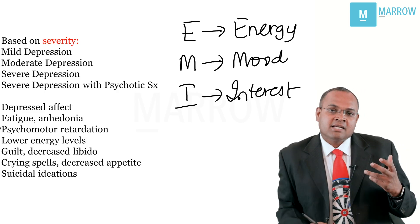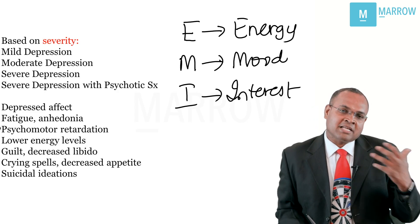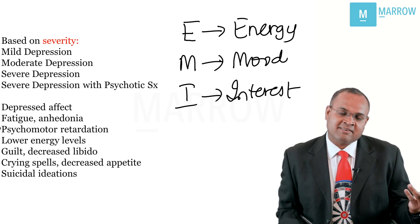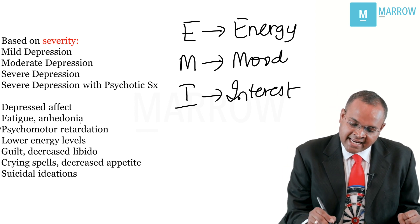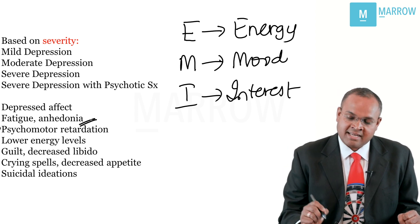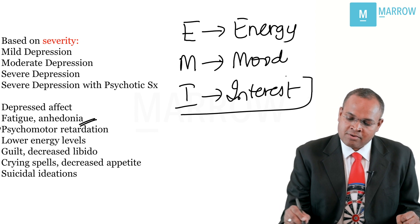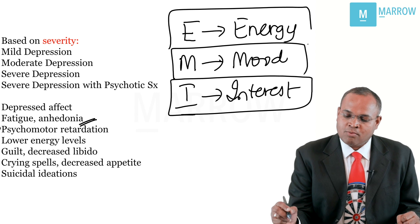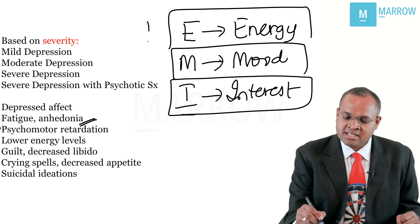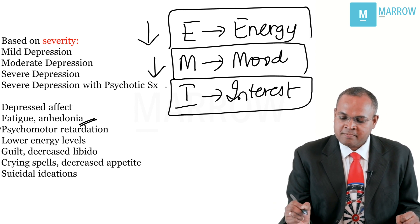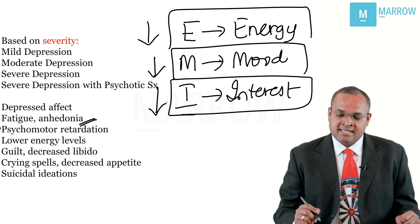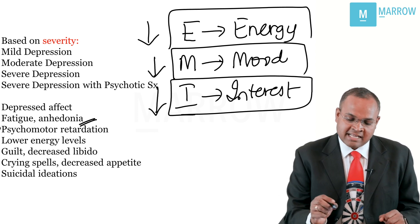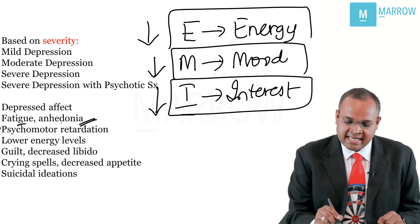Loss of interest in previously pleasurable activities is called anhedonia. Depression typically leads to three important things: one is low energy, low mood, and decreased interest levels.